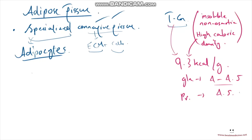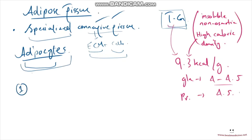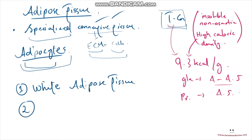Adipose tissue is a specialized connective tissue that contains adipocytes and connective tissue components, and it stores triglycerides. There are two types of adipose tissue because there are two types of adipocytes: white adipocytes forming white adipose tissue, and brown adipocytes forming brown adipose tissue. We'll start with white adipose tissue first.